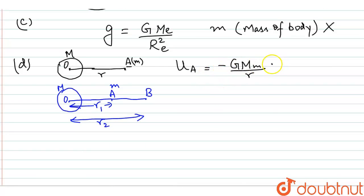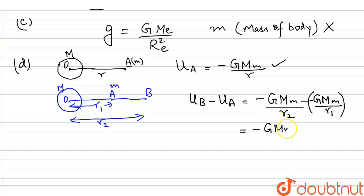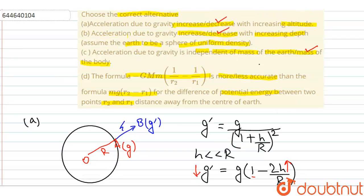Finding the difference in potential energy, we use: U_B minus U_A equals minus GMm/r2 minus (minus GMm/r1). Taking minus GMm common, we get: minus GMm times (1/r2 minus 1/r1). This matches the first formula, so that formula is more accurate than the formula mg(r2 minus r1). Students, thank you.